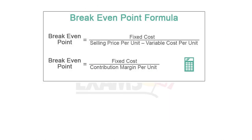The simple formula to calculate the break-even point is: fixed cost divided by selling price per unit minus variable cost per unit. Selling price per unit minus variable cost per unit is the contribution margin per unit. So the formula is: fixed cost divided by contribution margin per unit.